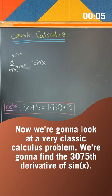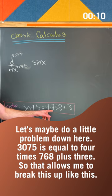Let's do a little problem down here. 3075 is equal to 4 times 768 plus 3. So that allows me to break this up like this.